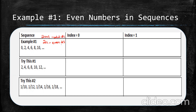Whether you need to add or subtract anything else depends on your index and where you start. If you start at 0 and you want the first term to be 0, just use 2n. This is 2 times 0, 2 times 1, 2 times 2, 2 times 3, and so on. So if your index starts at 0, the a sub n term is going to be 2n, starting at n equals 0.